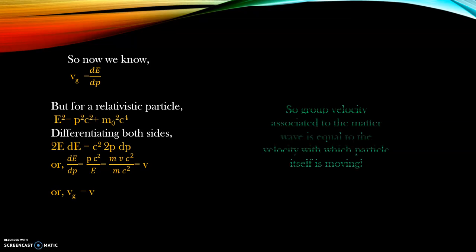As you can see, the group velocity associated with the matter wave is exactly equal to the velocity with which the particle itself is moving. So now can you understand the physical significance of the group velocity? This group velocity of the matter wave, which is nothing but the velocity with which the wave packet is traveling, is exactly equal to the velocity with which the particle itself is moving.